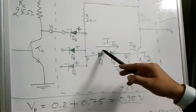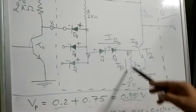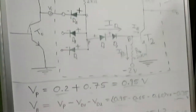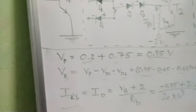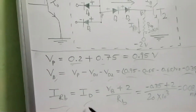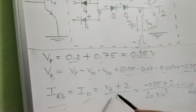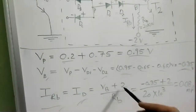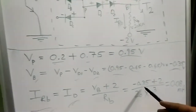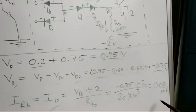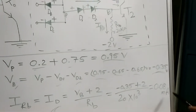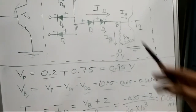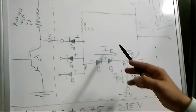The whole current Id flows through resistance RB, whose value is 20 kΩ. The IRB value is approximately equal to Id, calculated as (Vp minus (−2V)) divided by RB, which is (−0.75 + 2) / RB. The current comes out to approximately 0.08 mA, which is very small, confirming our earlier assumption.